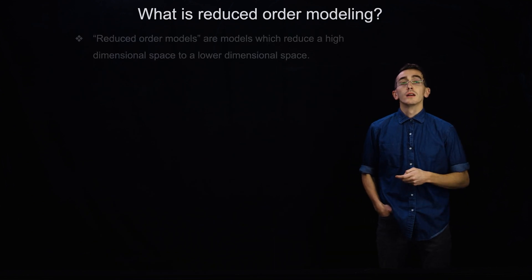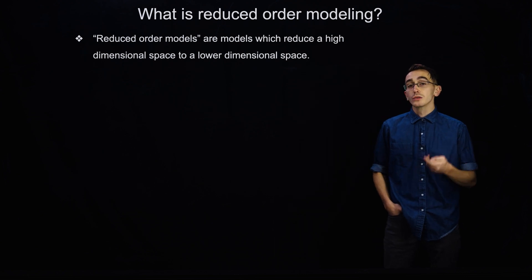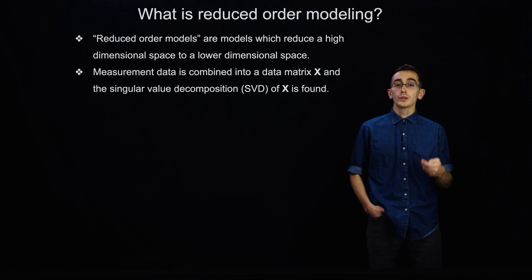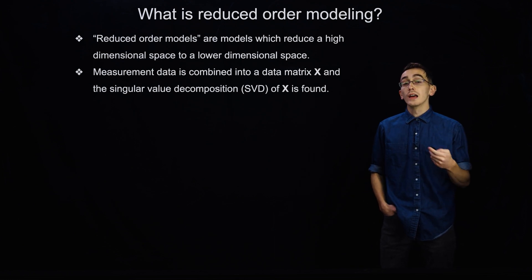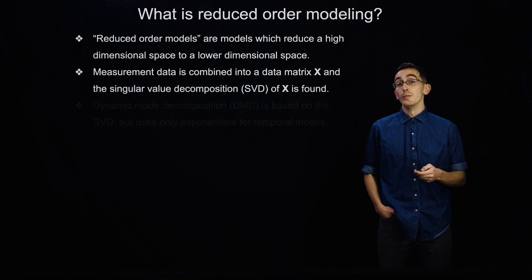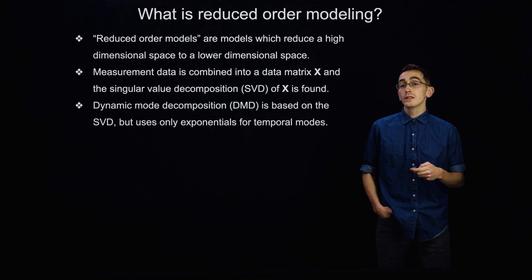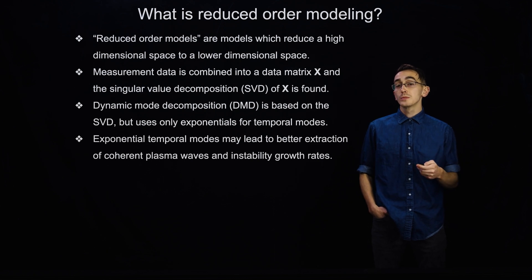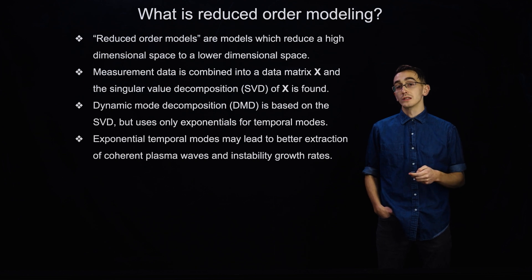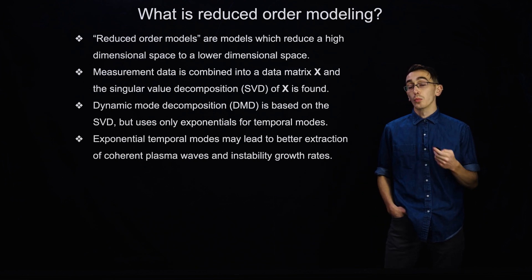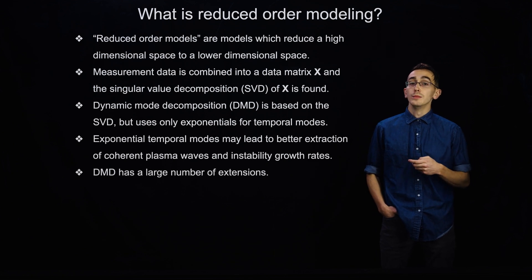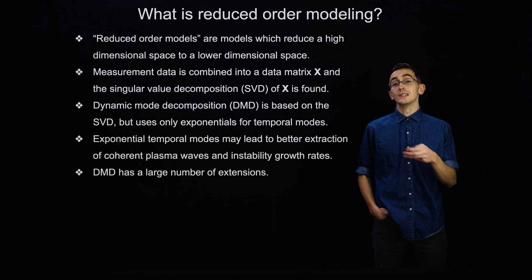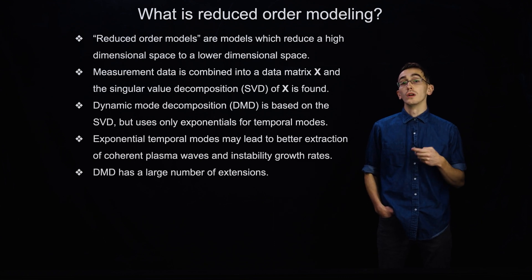So what is reduced order modeling? Very generally, reduced order models are models that map a high-dimensional space to a lower-dimensional space. Typically, what you might do is take a big set of measurement data — for instance, magnetic probe data or Thomson scattering data — and then take the SVD, or singular value decomposition, of that matrix. The Dynamic Mode Decomposition is based on the SVD, but actually restricts the temporal modes to be exponentials. We expect this might help for plasmas because there are a number of plasma phenomena like linear plasma waves and instabilities which are known to have an exponential temporal dependence. Another reason to use DMD is because of its large number of extensions — if you're an experimentalist, there's a whole host of extensions to tailor the method to whatever experimental goal you might have.